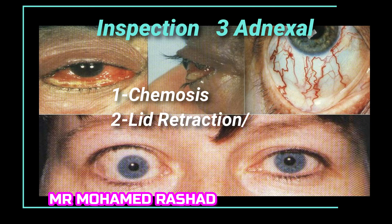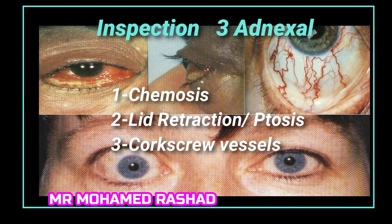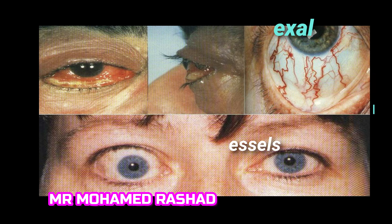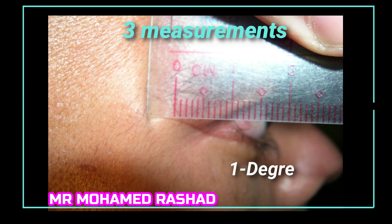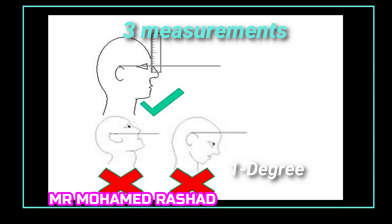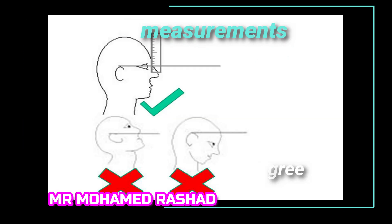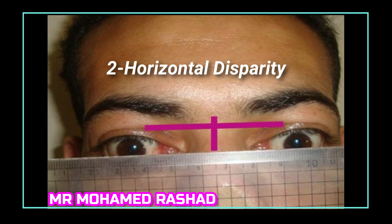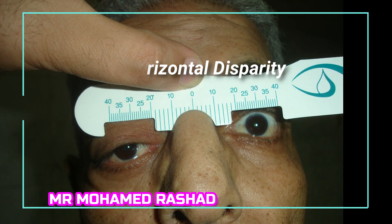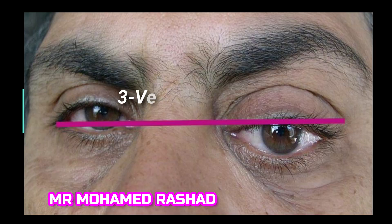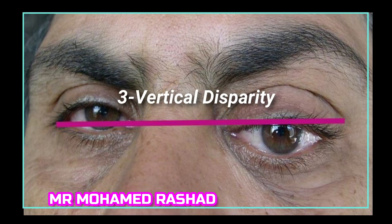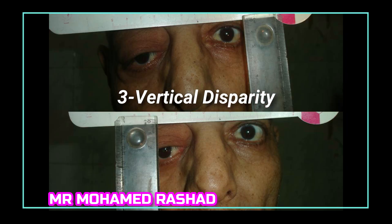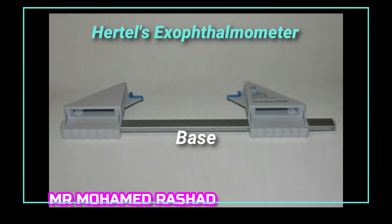You have to inspect for chemosis (upper left), corkscrew vessels (upper right), and lid retraction (lower photo). Measurement is taken from the lateral orbital rim to the apex of the cornea using a transparent ruler, with the patient in an upright position and the ruler parallel to the horizontal meridian. Measure the horizontal disparity from the midline to the limbus on both sides to exclude non-axial proptosis, and the vertical disparity from the lateral canthus to the pupil.